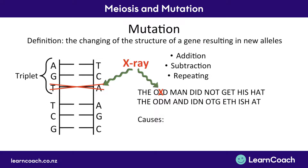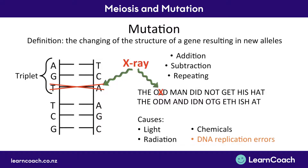There are four causes that could cause these changes in DNA. There could be light, radiation, or chemicals — all of which can cause addition, subtraction, or repeating of base pairs. The other cause, which isn't externally imposed, is that our body could make a mistake during DNA replication. These errors go on all the time, and occasionally you get a mutation which results in a new allele.